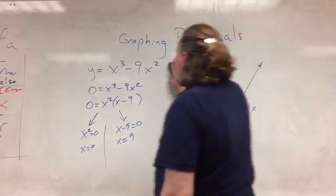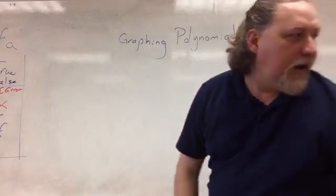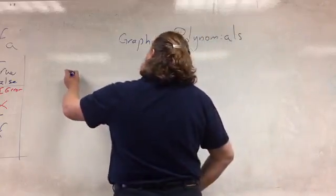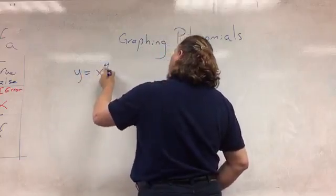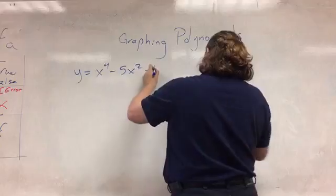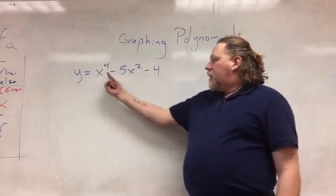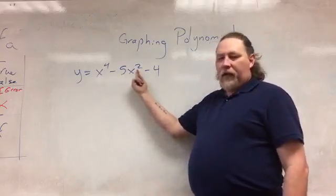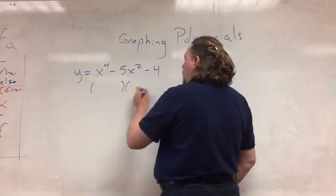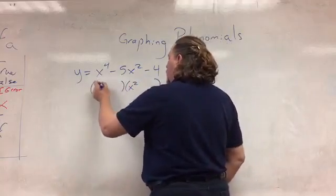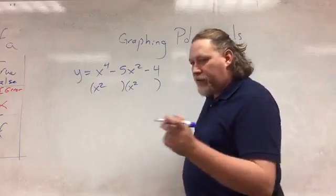All right, last one we're going to look at — a fourth power example. Notice that the fourth power is even and the second power is even, so what we're going to do to factor this is split it up into x squares. We're going to come back for the factoring in a second; first, let's do the end behavior. What's our end behavior on the left?